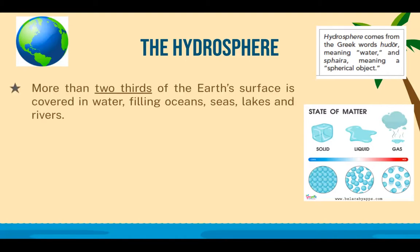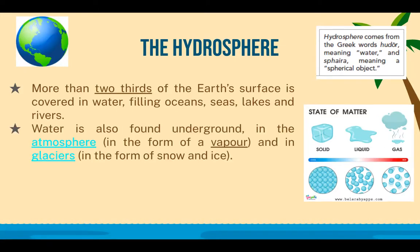More than two-thirds of the Earth's surface is covered in water, filling oceans, seas, lakes, and rivers. Two-thirds equals about 67% of the Earth covered in water. Water is also found underground, in the atmosphere in the form of vapor — when a substance is no longer a liquid but in the gas phase — and in glaciers in the form of snow and ice.